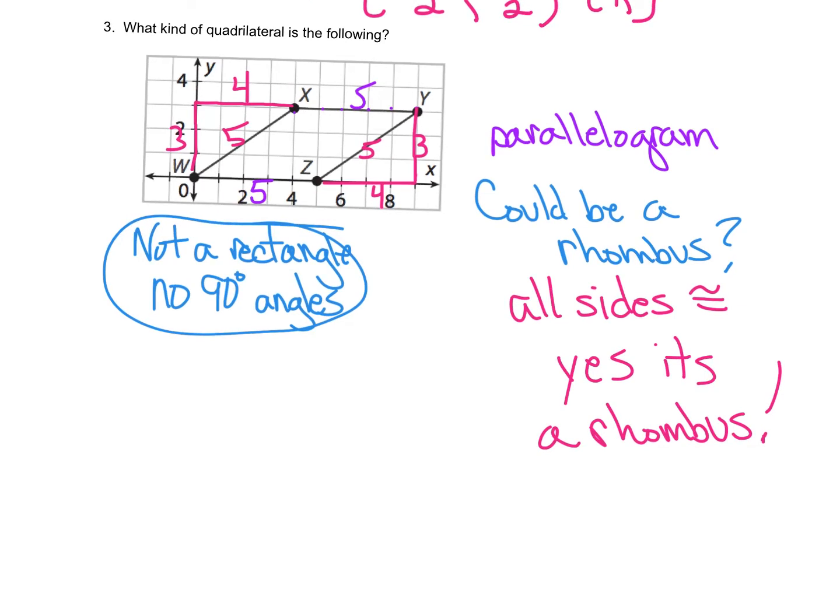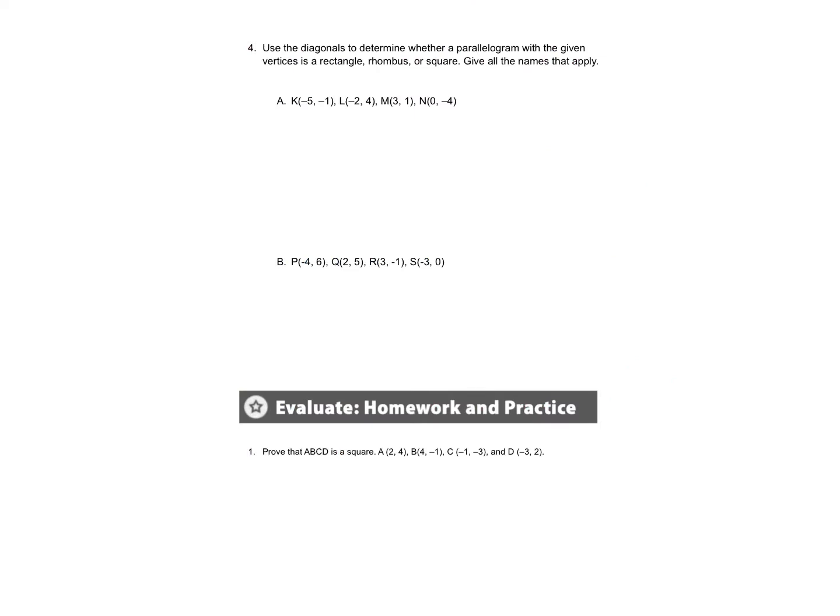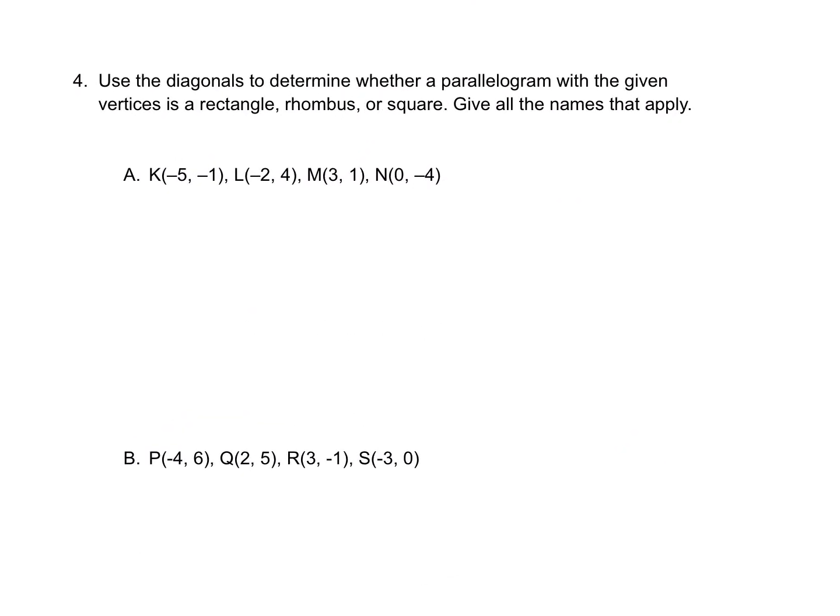If you don't remember the 3, 4, 5 triangle, then let's just pick one of these. XW, the distance would be 3 squared, Pythagorean Theorem, plus 4 squared. And that would give me the square root of 25, which is 5. All right, let's see. Two more.